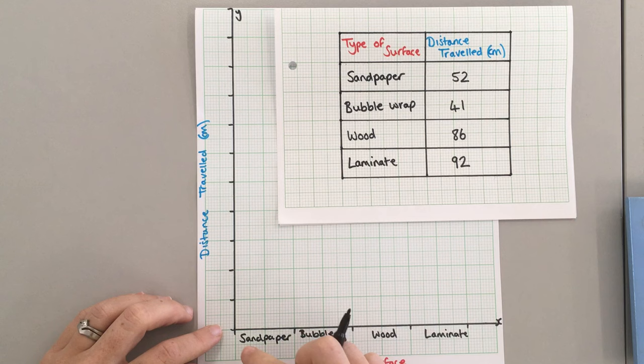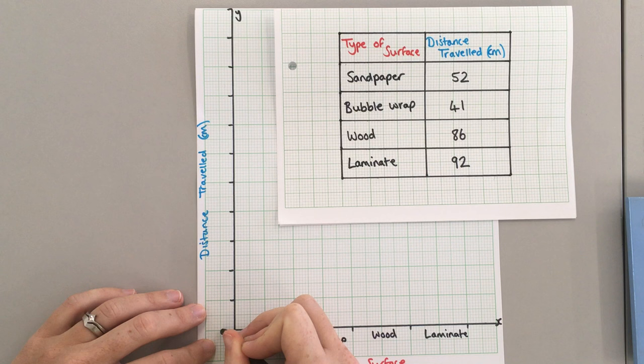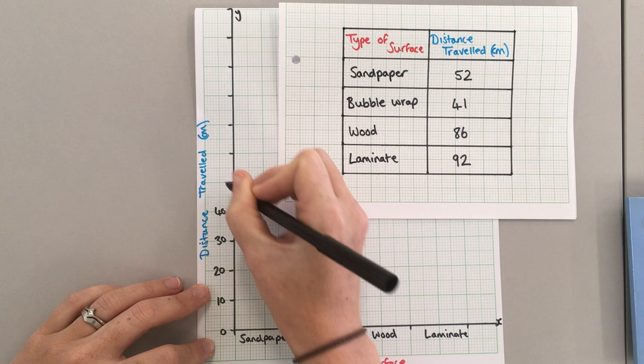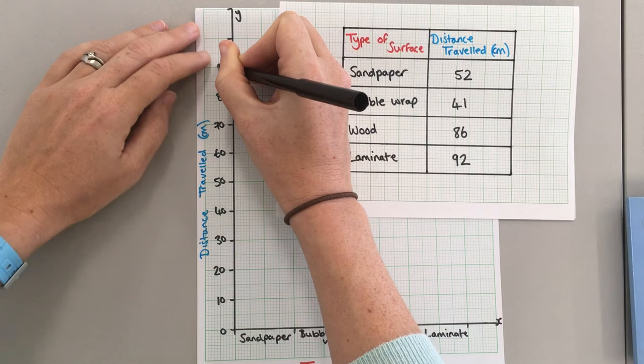Up the side, I need to get to 92. So each of these gaps has ten small squares, so it makes sense for me to go up in tens: 10, 20, 30, 40, 50, 60, 70, 80, 90, and 100.